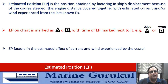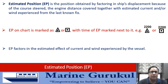EP factors in the estimated effect of current and wind. Among all three, the observed position or fix is the most accurate — the actual position confirmed by definitive means. Next in order of accuracy is the estimated position, and last is the DR. We use these positions in the same order of priority: fix first, then EP, and if neither is available, the DR position.